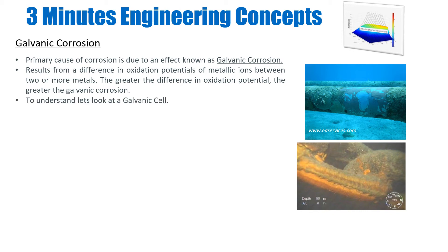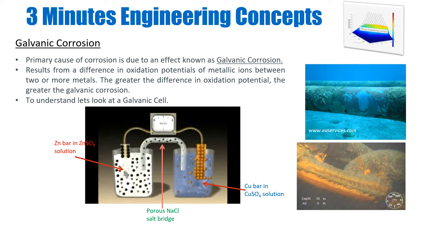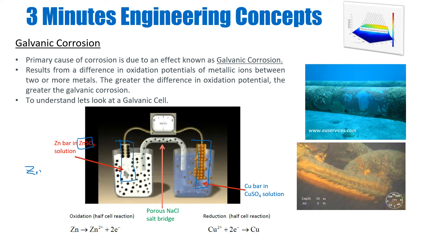Let's look at the typical construction of a galvanic cell. In this basic construction, you have an electrode made up of zinc — the zinc bar — and on the other side a copper bar. Zinc has a higher oxidation potential than copper, so zinc is more prone to losing electrons. The zinc bar is placed in a zinc sulfate solution, which contains zinc²⁺ ions and sulfate²⁻ ions, while the copper bar sits in a copper sulfate solution containing copper ions and sulfate ions.